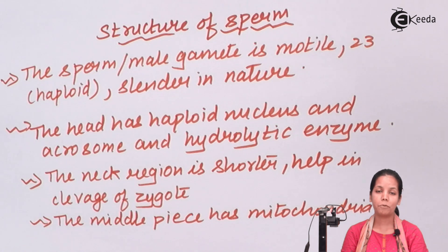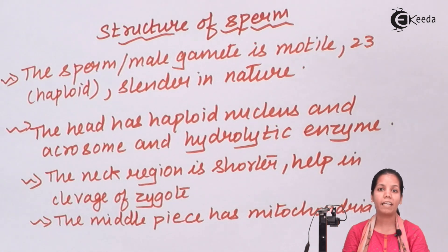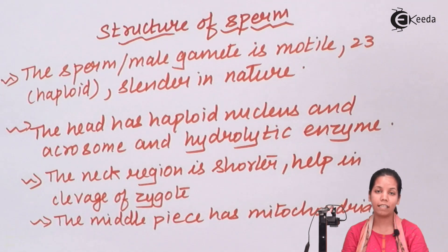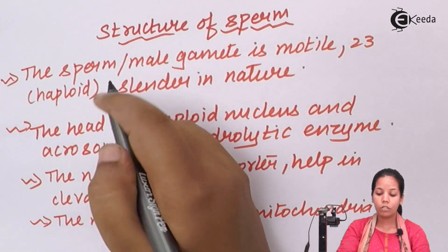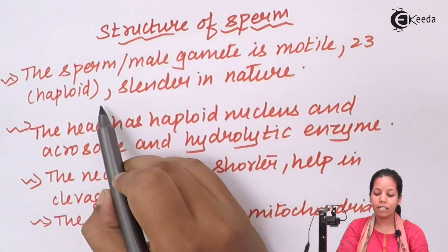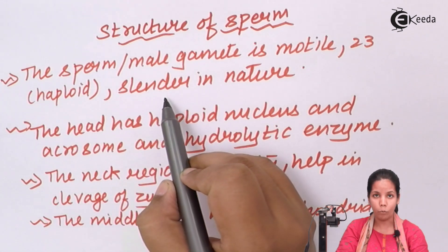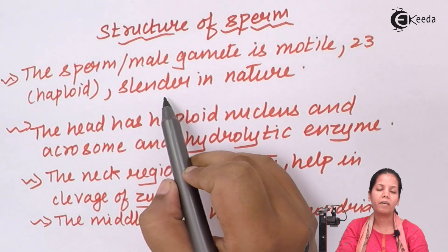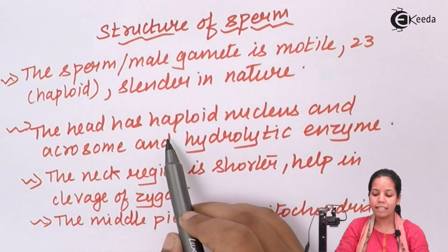The male gametophyte, or sperm, is basically haploid — it consists of 23 chromosomes. It is motile and it fuses with the female gamete, which is the egg cell, also haploid in nature. The sperm is slender in nature and motile since it passes through the female reproductive tract.